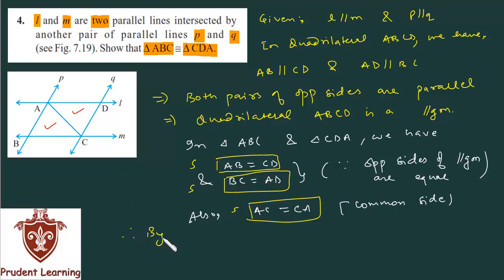By SSS congruence rule, triangle ABC is congruent with triangle CDA. This completes the solution. Let us move on to the next question.